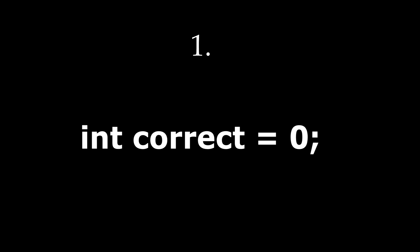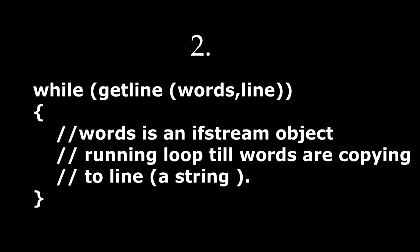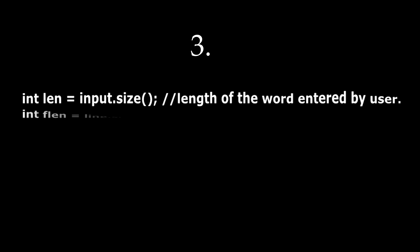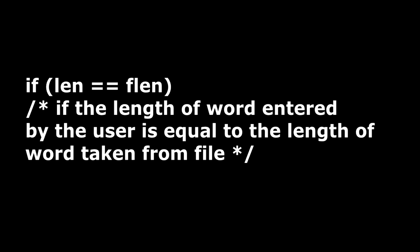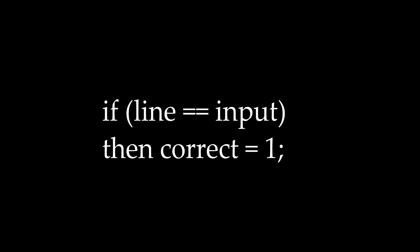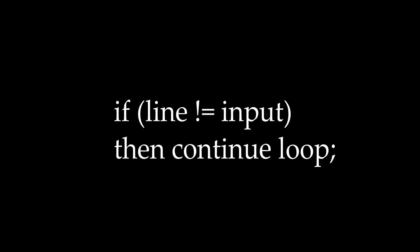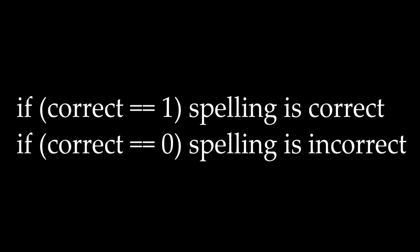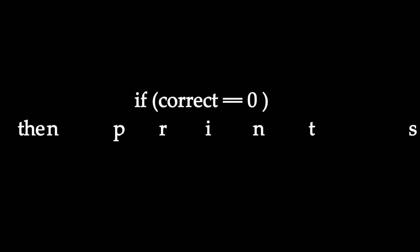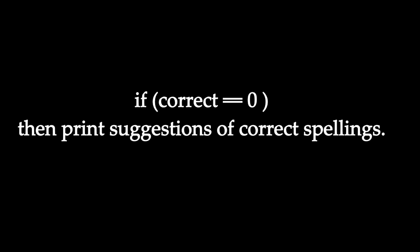If the file exists, perform the following steps. First, declare an integer variable 'correct' and initialize it with zero. Second, start a loop to read the file line by line. Third, compare the length of the word entered by the user and the length of the word taken from the file. If lengths are equal, check if both words are the same. If they are the same, make correct equal to one; otherwise, continue the loop. After the loop is finished, check the value of correct. If correct equals one, spelling is correct; if correct equals zero, spelling is incorrect.